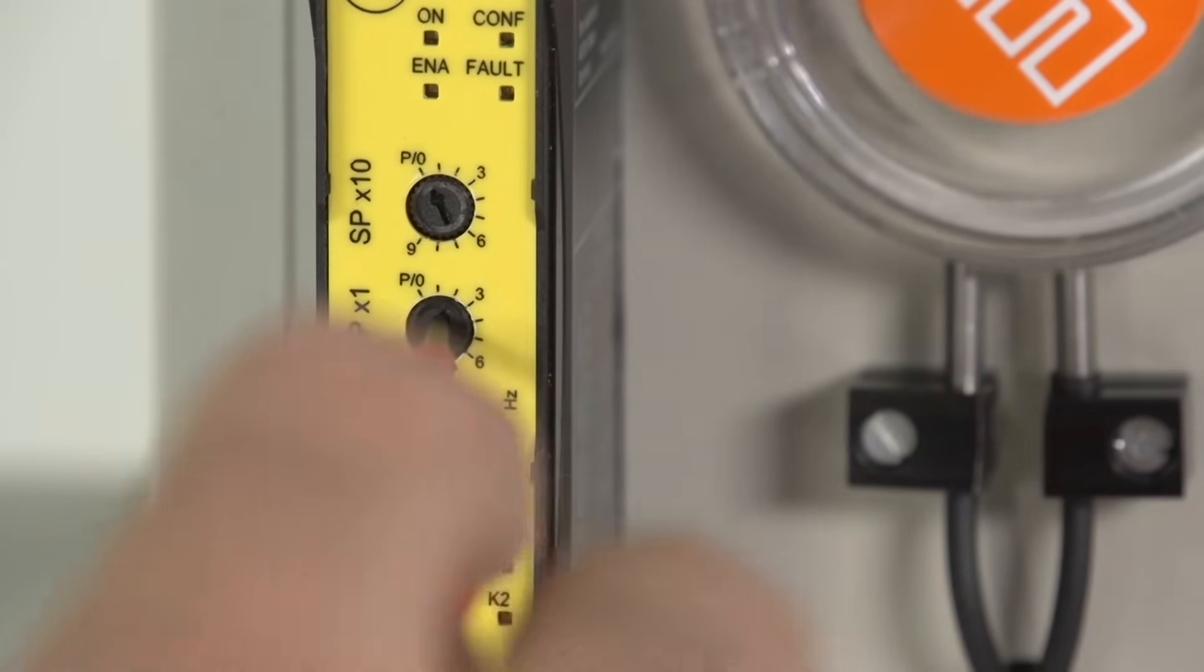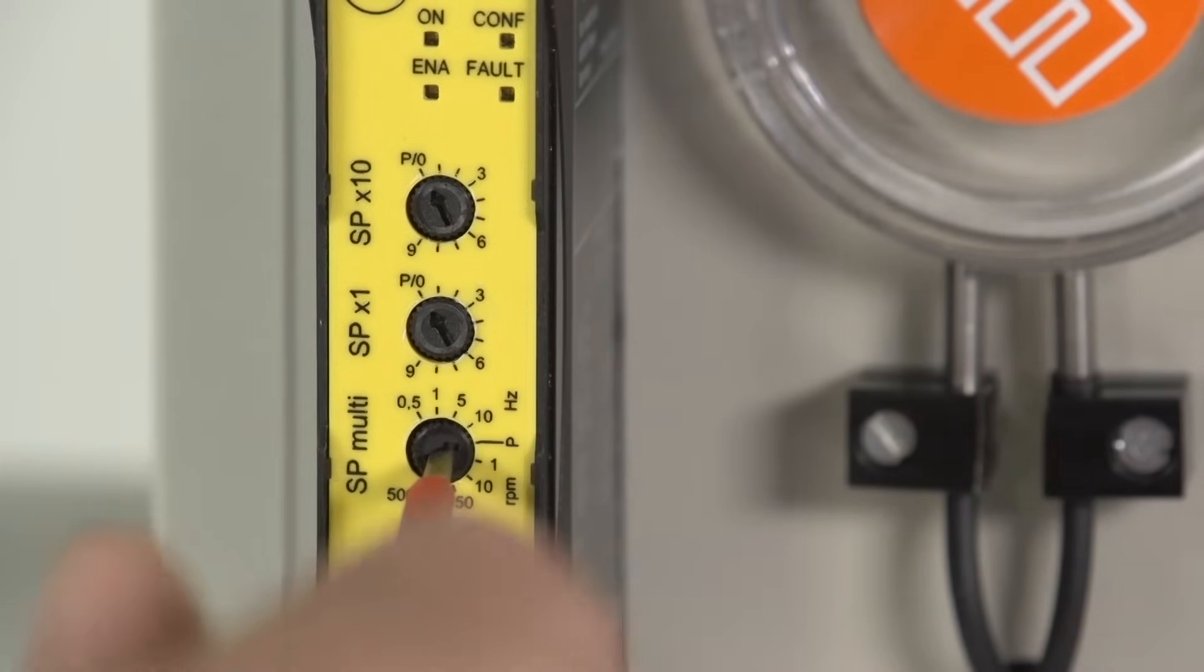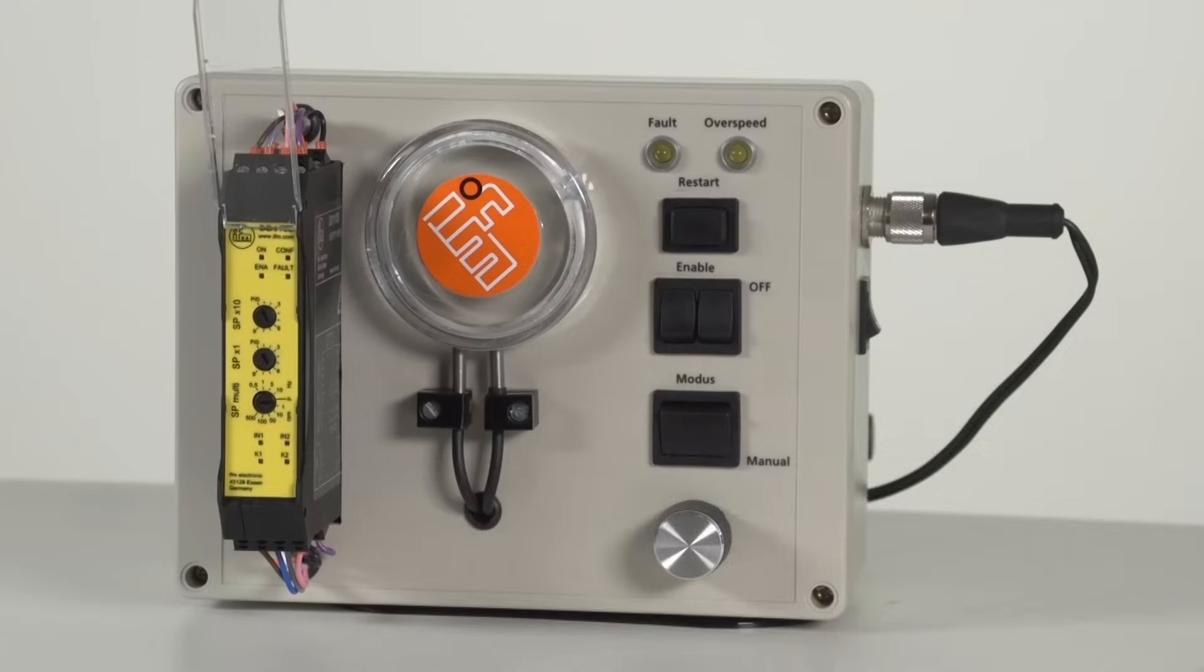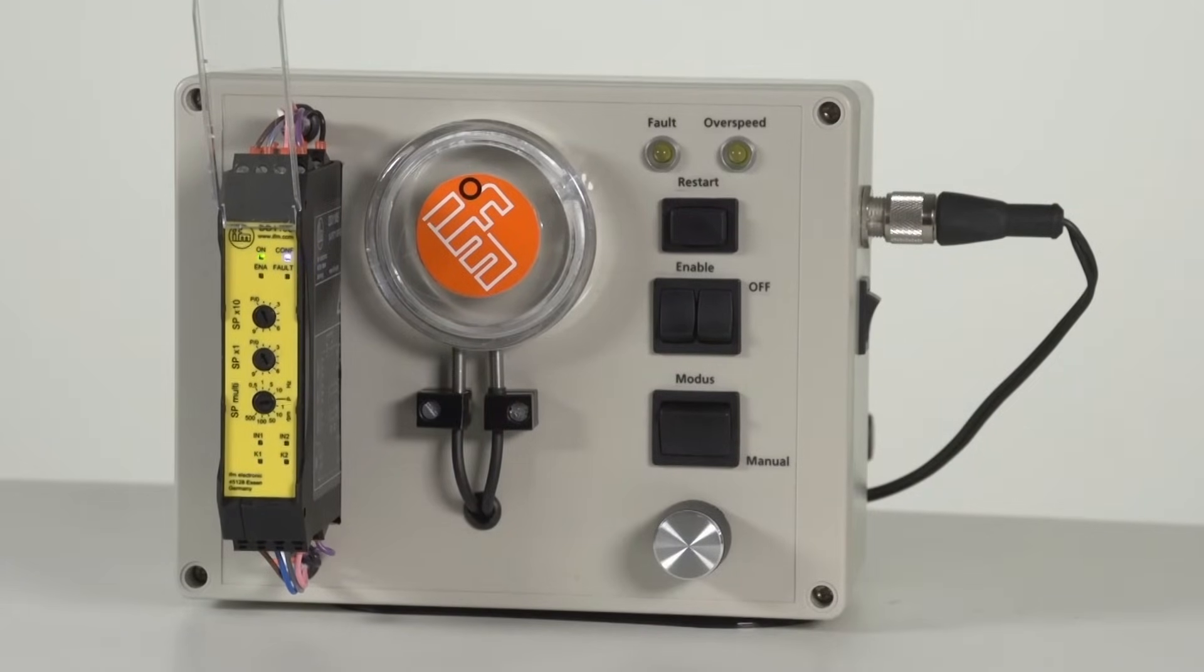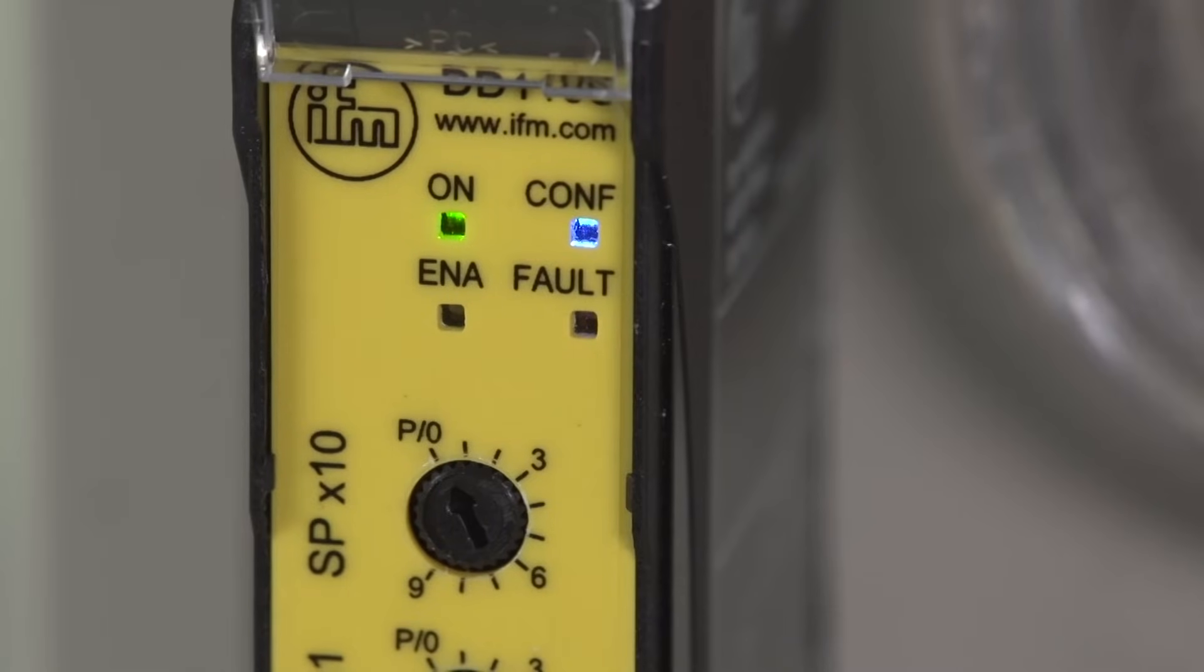When the monitor is switched on for the first time, all three rotary switches must be set to the position P. Then the SAFE speed monitor goes into the configuration mode. This is indicated by the flashing blue LED.